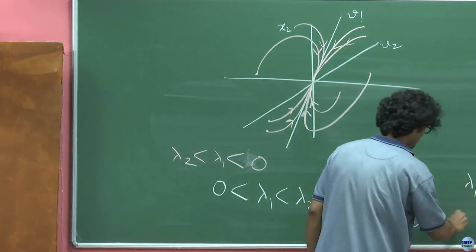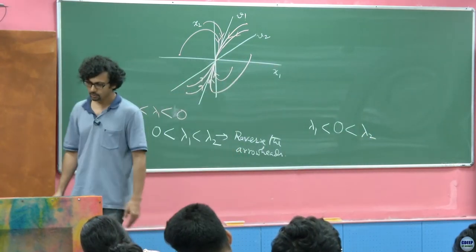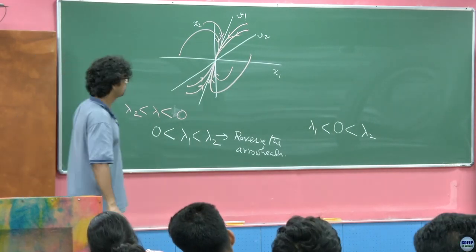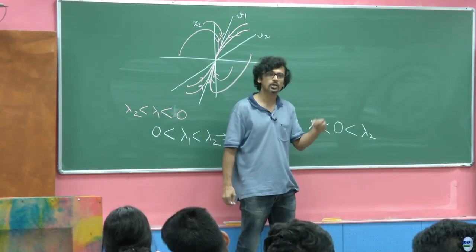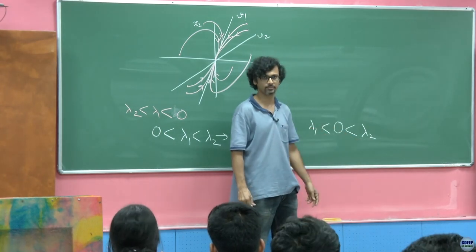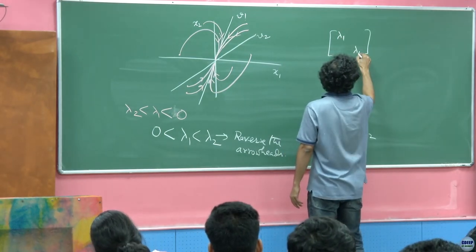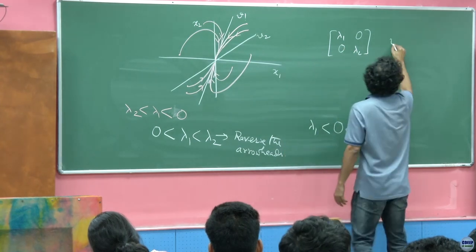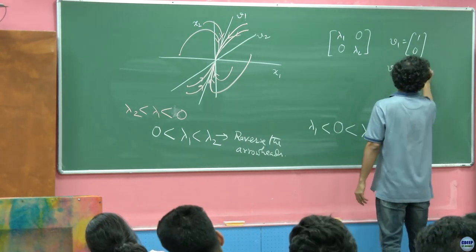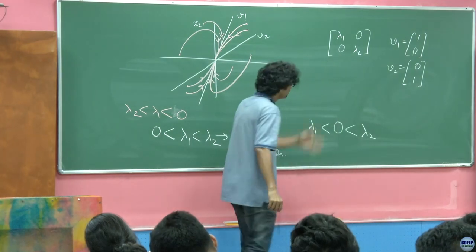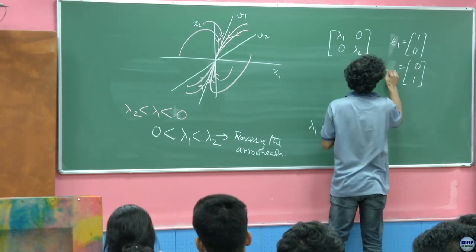A more interesting case is when lambda 1 is less than 0 is less than lambda 2. Things get interesting because along one direction there is a tendency to draw toward the origin, and along the other direction there is a tendency to draw away. For a diagonal matrix with lambda 1 and lambda 2 on the diagonal, v1 is given by e1 = (1,0) and v2 by e2 = (0,1).